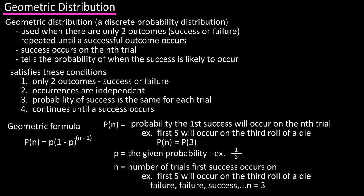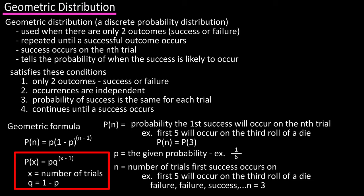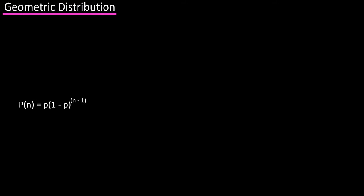One note, this formula is sometimes written as probability of x equals small p times q raised to the x minus one. And in this formula, x represents the number of trials the first success is on, and the q is equal to one minus p, which we have used in other distributions. But these formulas are the same. Let's look at a couple of examples.